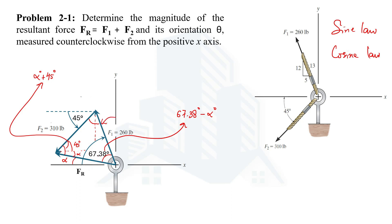Since F1 makes an angle of 67.38 degrees with the negative x-axis, the complementary angle is 90 minus 67.38, which gives 22.62 degrees. The third internal angle is then 45 plus 22.62, which equals 67.62 degrees.